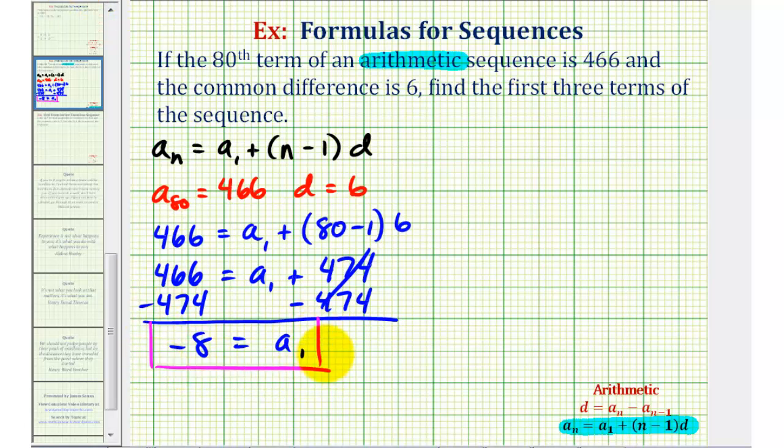We'll use this information to write our formula for the entire sequence. A sub n must equal a sub one, which we know is negative eight, plus n minus one times our common difference d, which we know is six.